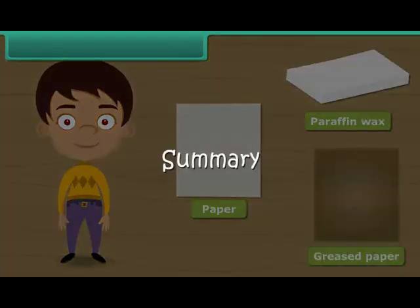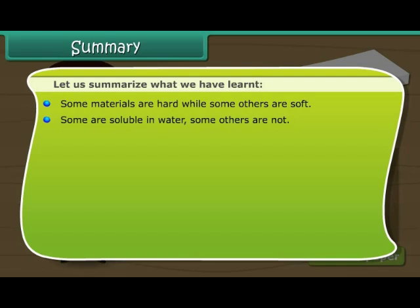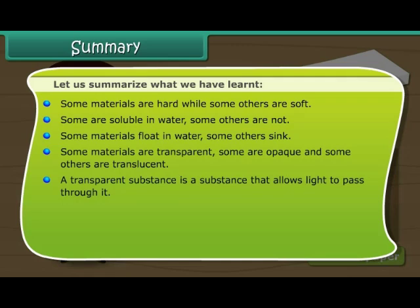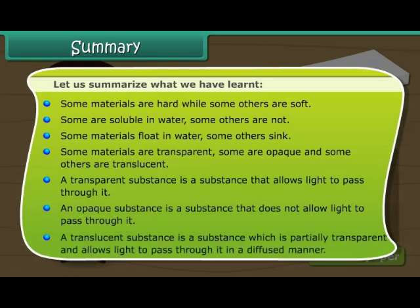Summary. Let us summarize what we have learned. A transparent substance is a substance that allows light to pass through it. An opaque substance is a substance that does not allow light to pass through it. A translucent substance is a substance which is partially transparent and allows light to pass through it in a diffused manner.